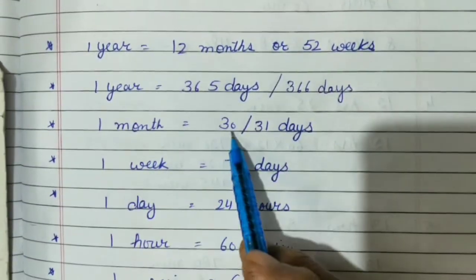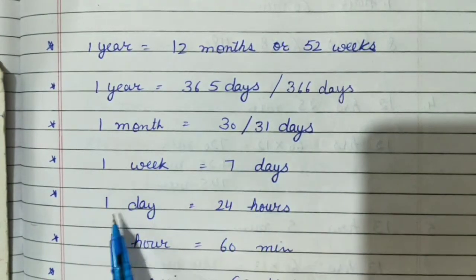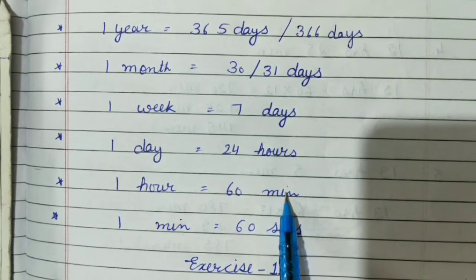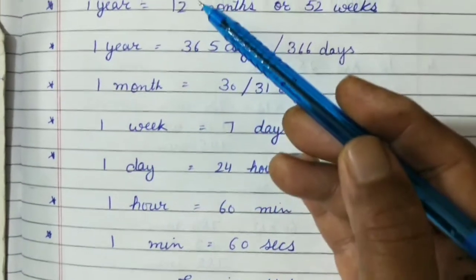One month is equal to 30 or 31 days. One week is equal to 7 days. One day is equal to 24 hours. One hour is equal to 60 minutes. One minute is equal to 60 seconds. You have to learn all this.